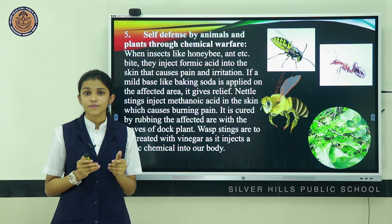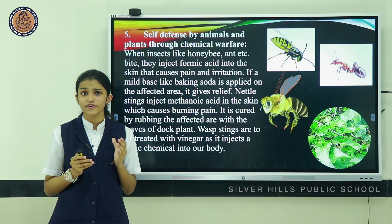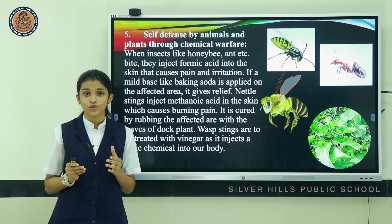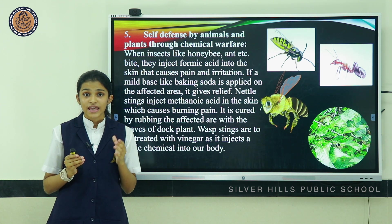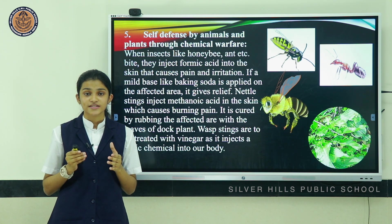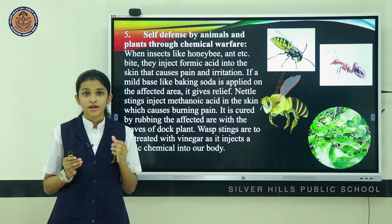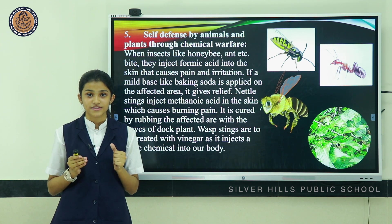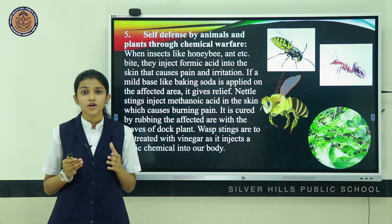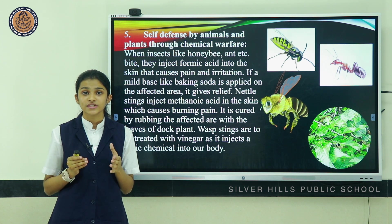Self-defense by animals and plants through chemical warfare is another example. When insects like honey bees bite, they inject formic acid into the skin, causing pain and irritation. Applying a mild base like baking soda on the affected area gives relief. Nettle stings inject methanoic acid into the skin causing burning pain, which is cured by rubbing the area with the leaves of dock plants. Wasp stings inject a basic chemical into the body, which is treated with vinegar.